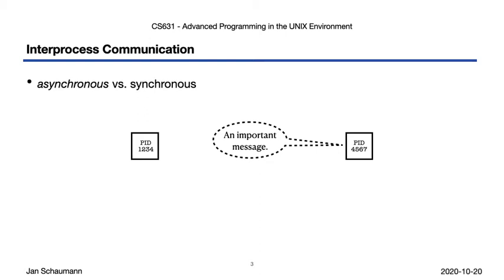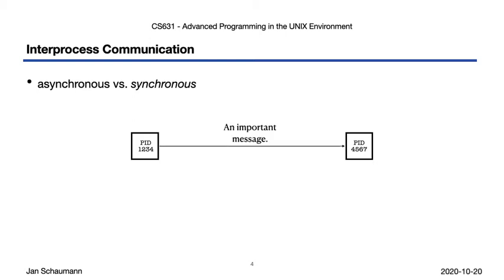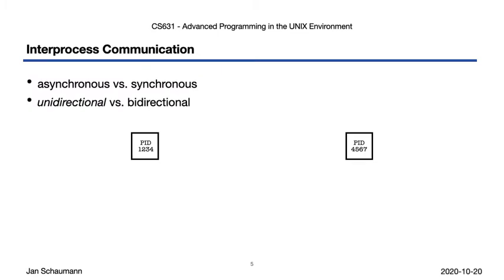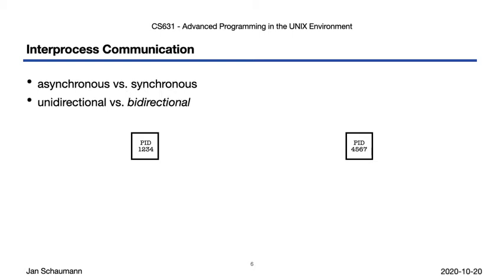In contrast, in synchronous IPC, the sender and recipient are operating in a coordinated manner, and the message is received immediately. Inter-process communications may also be either unidirectional, as shown here where only one process can deliver a message to the other — with the receiving process having no means to send anything back — or the communication may be bidirectional, allowing either party to send a message to the other.